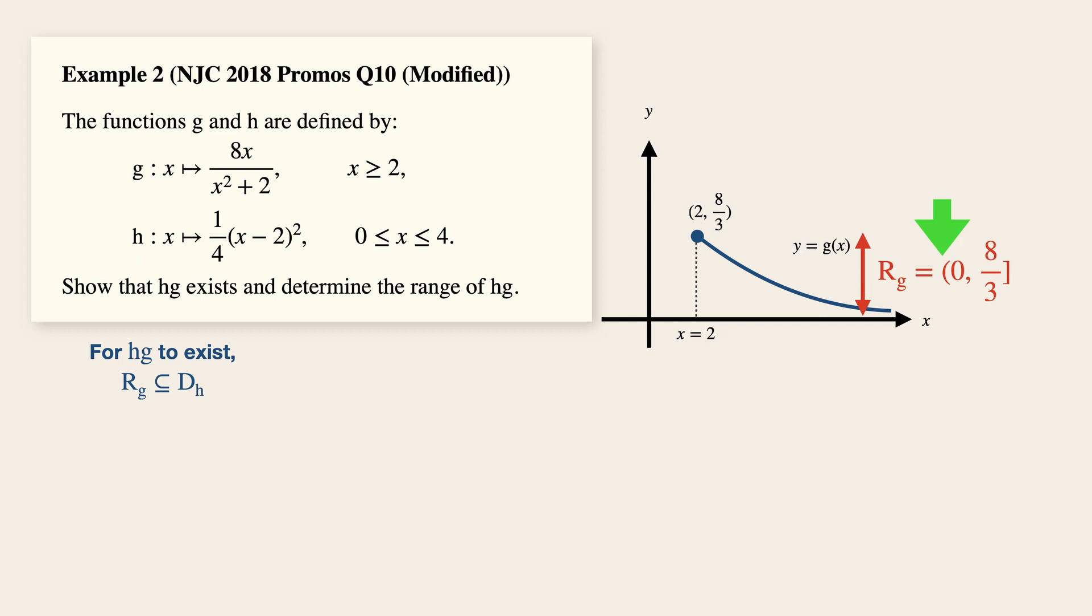Do note that this is a curved bracket over here as the graph will never touch y equals to zero. Whereas this is a square bracket to indicate that the range is up to and including the value eight over three because of this given sign over here. Now the range of G is indeed a subset of the domain of H given by zero to four. Thus, we conclude that the composite function HG exists.